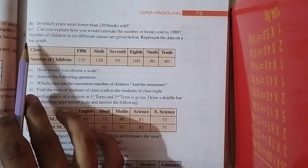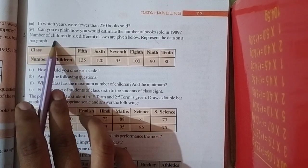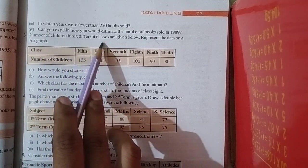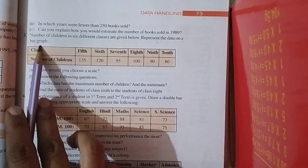Hello students, let us continue exercise 3.3, question 3. Number of children in 6 different classes are given below. Represent the data on a bar graph.